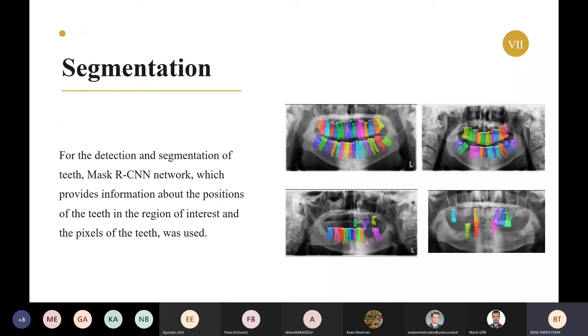In the neural network, the ResNet-101 FPN feature pyramid network model is used as the backbone network. Transfer learning is provided with pre-trained MS COCO weights and further detection and segmentation of teeth with Mask R-CNN, which provides information about the positions of the object in the region of interest and the pixels of the teeth.